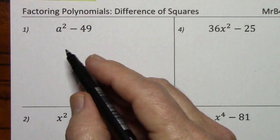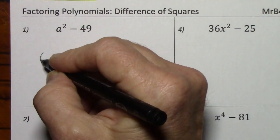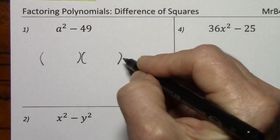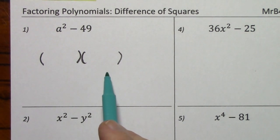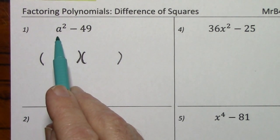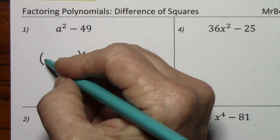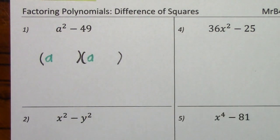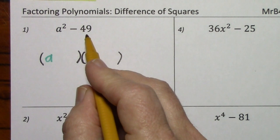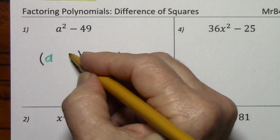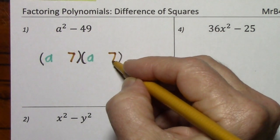If you have a difference of squares, you can factor this without really writing anything except the answer. So give yourself two sets of parentheses. Think of the square root of a squared, which is a. So you put an a here and an a here.